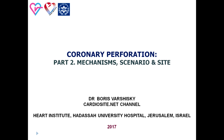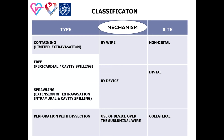Coronary artery perforation is an iatrogenic complication of PCI. There are three main scenarios of perforation: perforation appearing after wire manipulation, perforation appearing after use of an intraluminal device, and perforation presenting after use of a device following incorrect wire position.